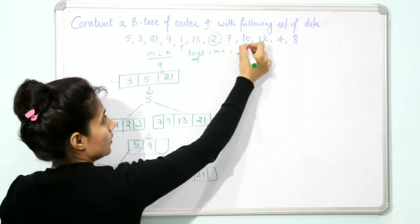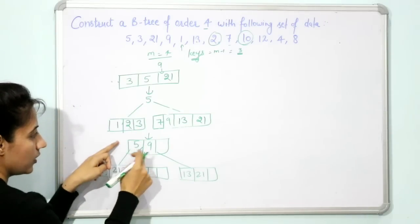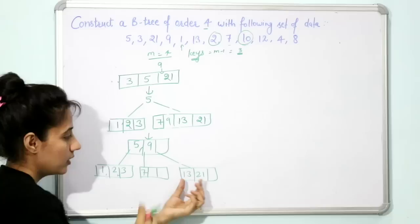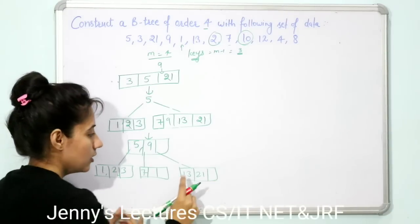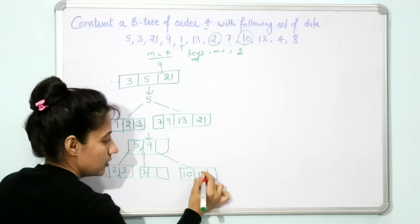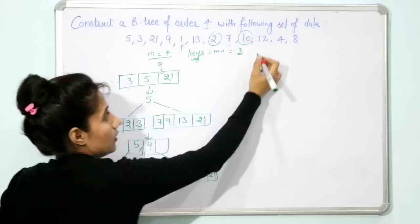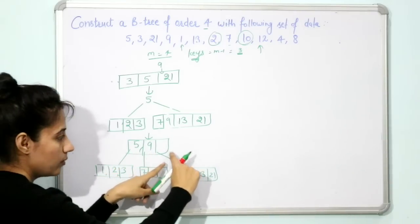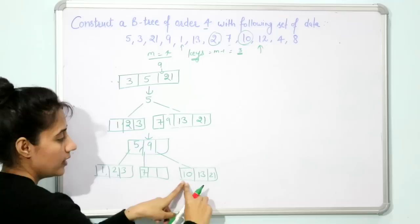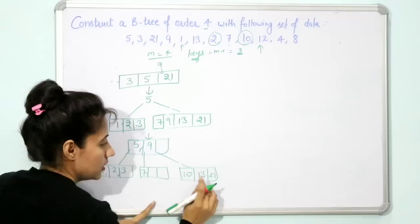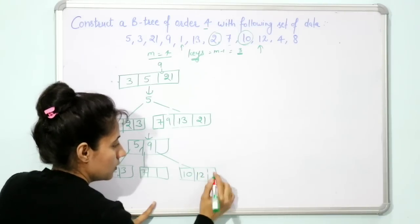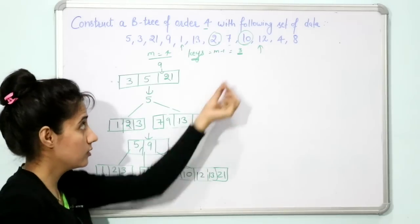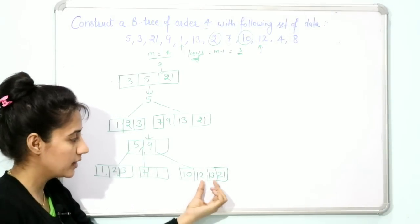Next is 10. Compare with root [5, 9] — 10 is greater than 9, so we go to the right child of 9. The proper place is before 13, so 10 is inserted: [10, 13, 21]. Next is 12. It is also greater than 9, so we go right again. 12 goes after 10 and before 13, making the node [10, 12, 13, 21] — which has 4 keys, so splitting is required.